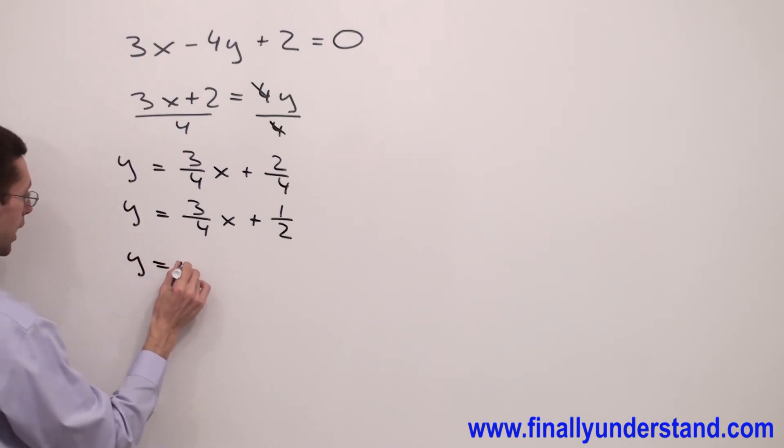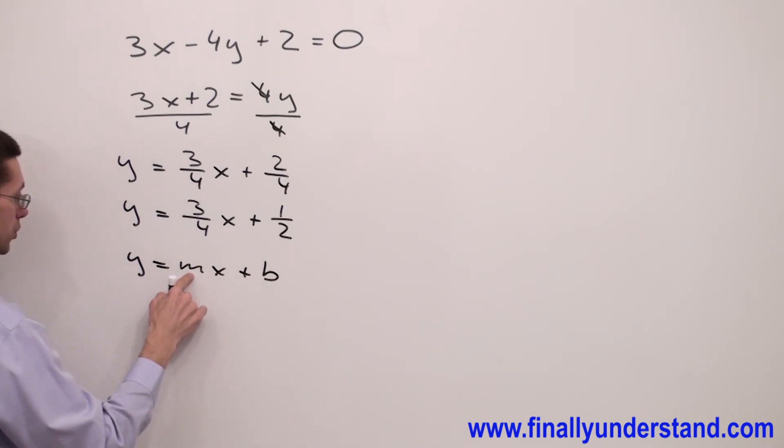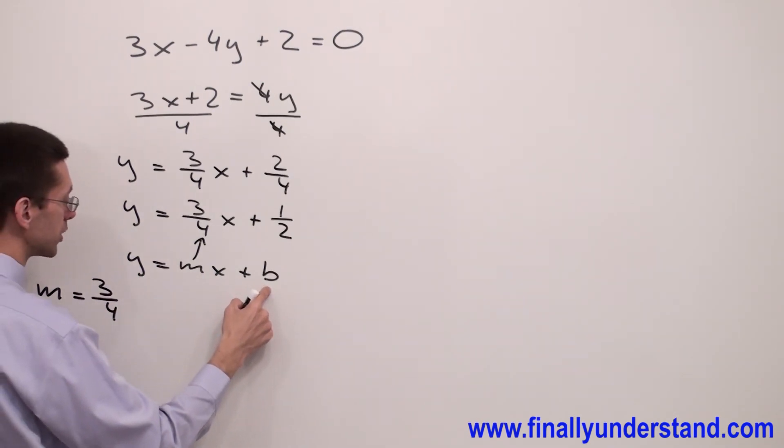Where m is slope, so my slope equals three-fourths. I have m equals 3/4. b represents y-intercept.